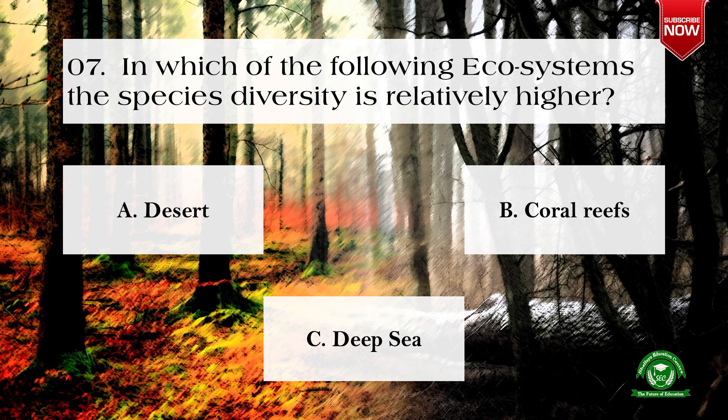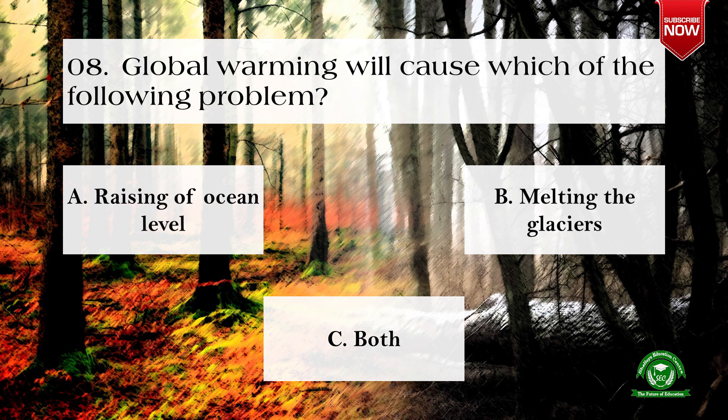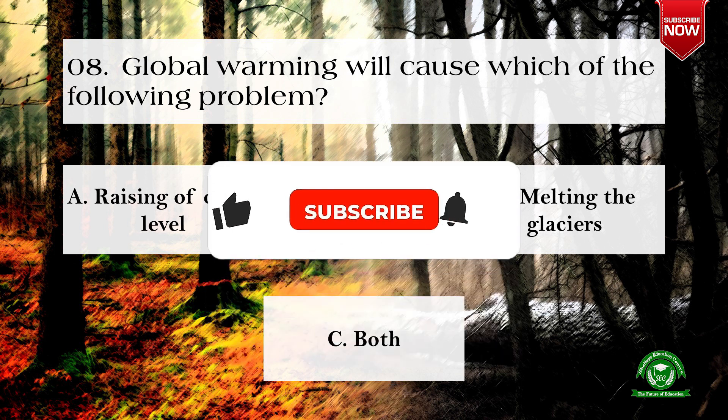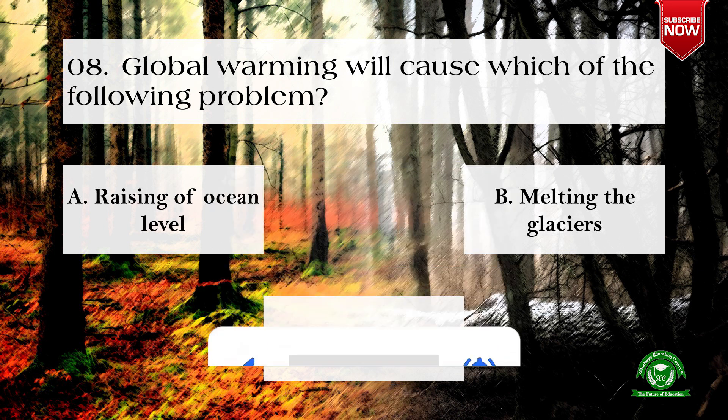Next question: in which of the following ecosystems is species diversity relatively higher? Options are: a) desert, b) coral reefs, c) deep sea. The correct option is b) coral reefs. Next question: global warming will cause which of the following problems? Options are: a) raising of ocean level, b) melting of glaciers, c) both.